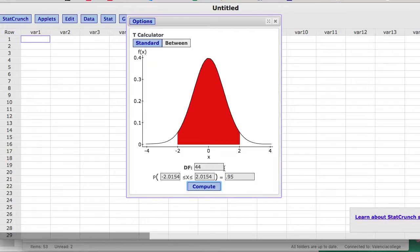So if I'm doing a confidence interval, I'm going to always want to make sure I click on the between button. And then I'm going to type in the confidence to the right. That's my probability. It's the area under the curve. And then the stat calculator will compute these two critical values for me.